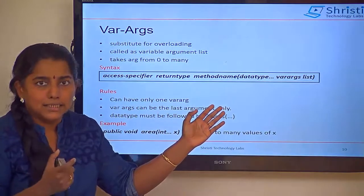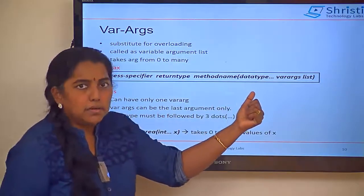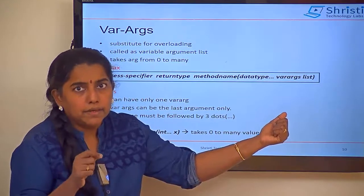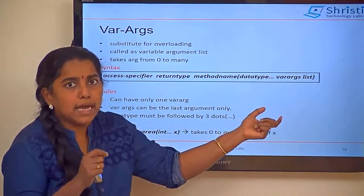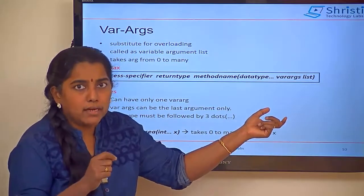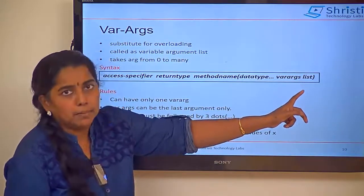Where exactly is the change? The data type, which is followed by three dots. This is actually specifying that this is of type varargs. And you are going to give the variable name.